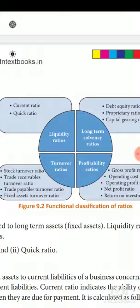Long-term solvency ratios include debt equity ratio, proprietary ratio, and capital gearing ratio. So when you have to classify, debt equity, proprietary, and capital gearing fall under long-term solvency ratios.